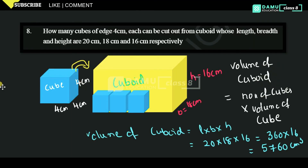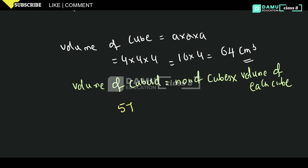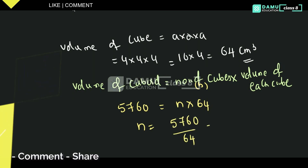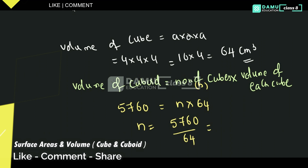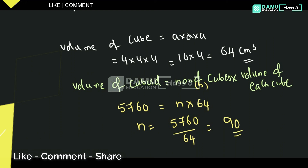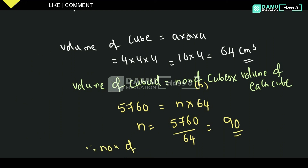Volume of cuboid is 5760, so 5760 will be equal to number of cubes (let us take small n) into volume of each cube, 64. Then the number of cubes that can be cut is 5760 divided by 64, which gives 90. Therefore, number of cubes that can be cut with side 4 cm will be equal to 90.